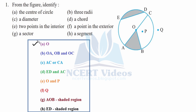Now, three radii — radii means radials — so OA, OB, and OC are three radii. Now C part: a diameter. A diameter is the longest chord, that is AC. It is twice the radius, so this is your diameter.